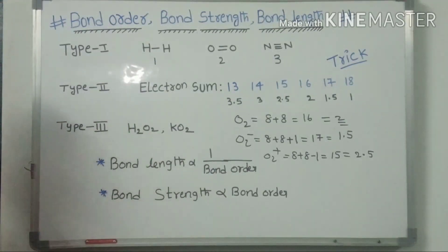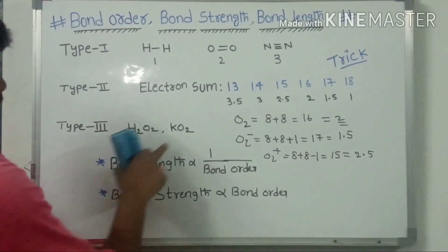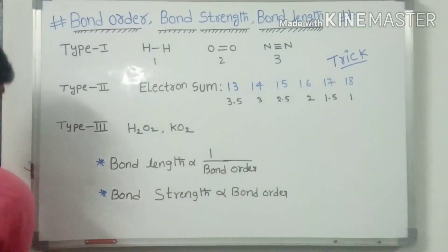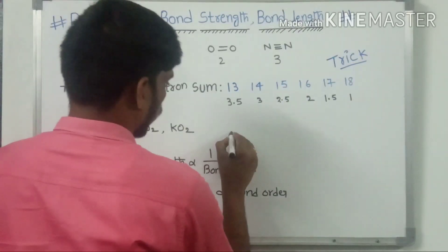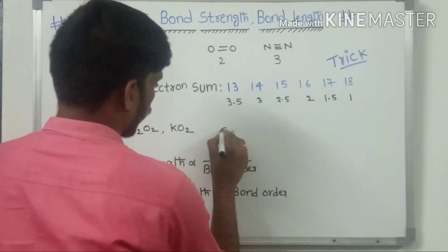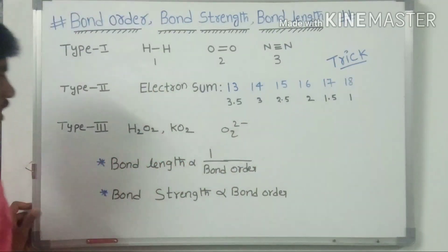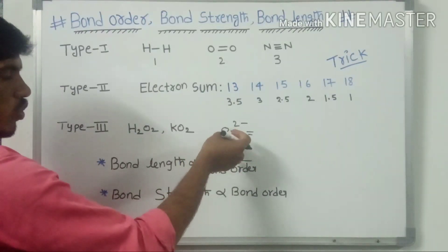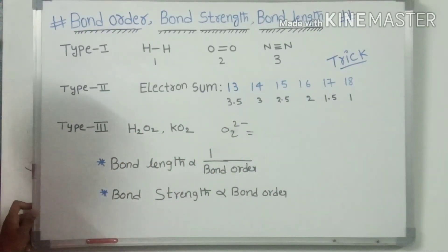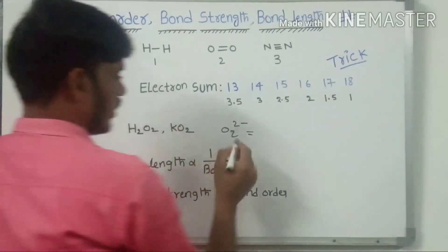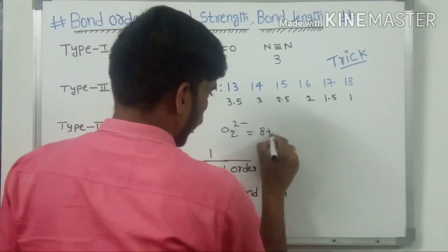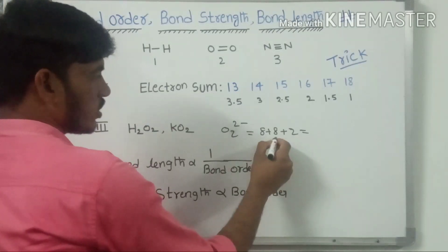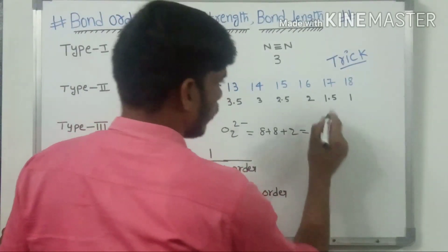Type 3 examples are H₂O₂ and K₂O₂. For H₂O₂: it is converted to O₂²⁻, releasing 2 H⁺ ions. So O₂²⁻ has electrons: 8 + 8 + 2 = 18. Therefore, the bond order of H₂O₂ is 1.